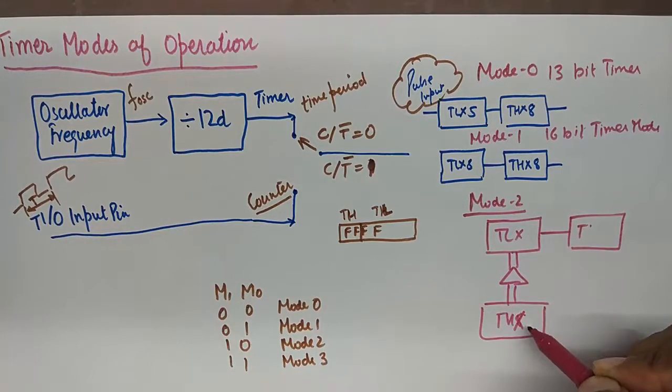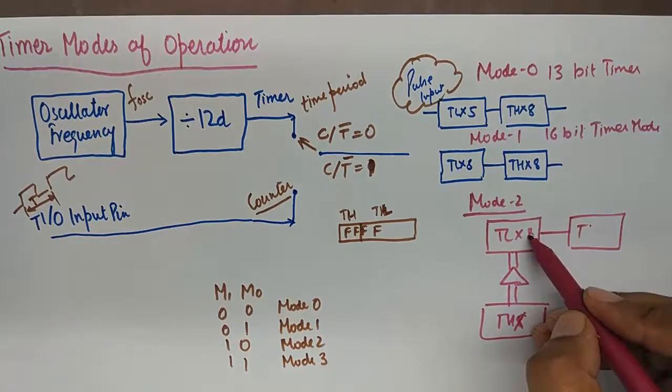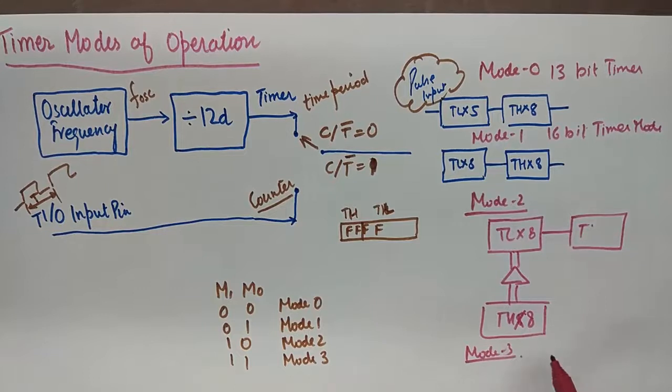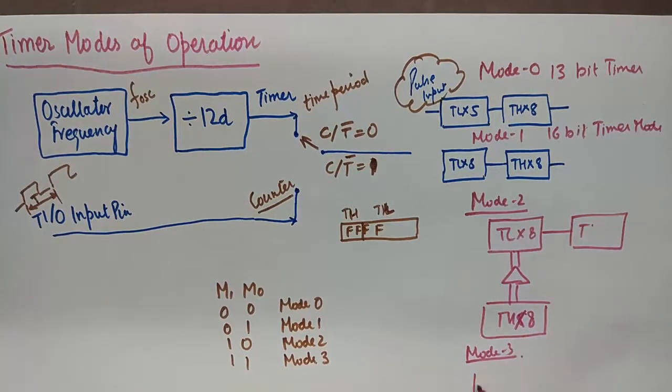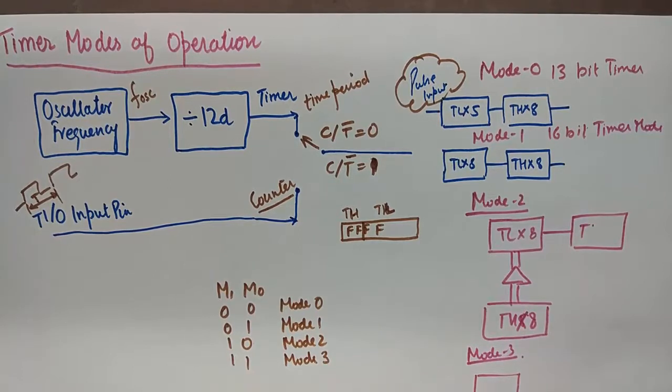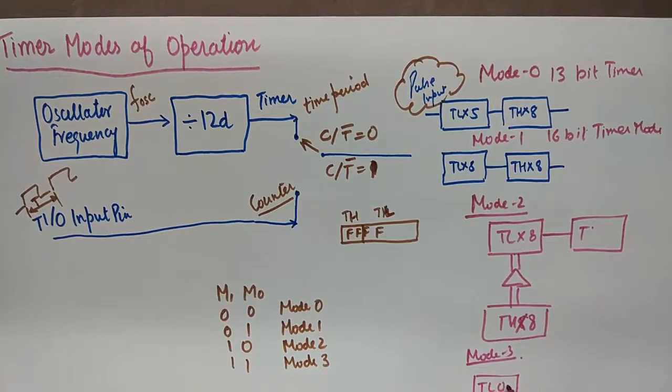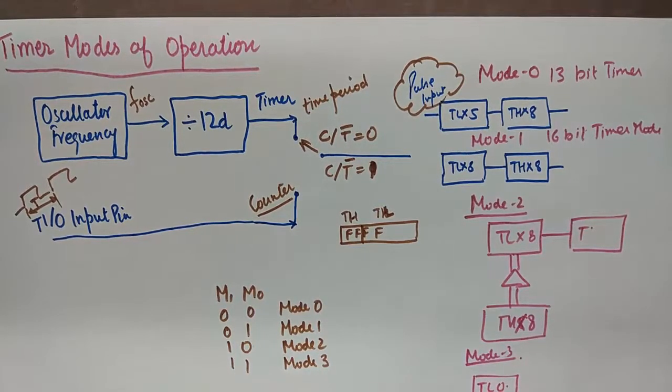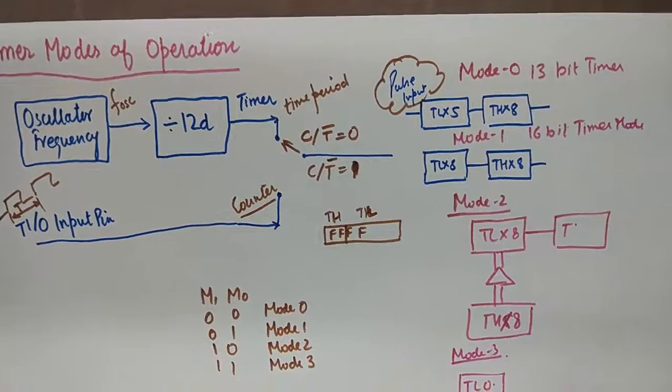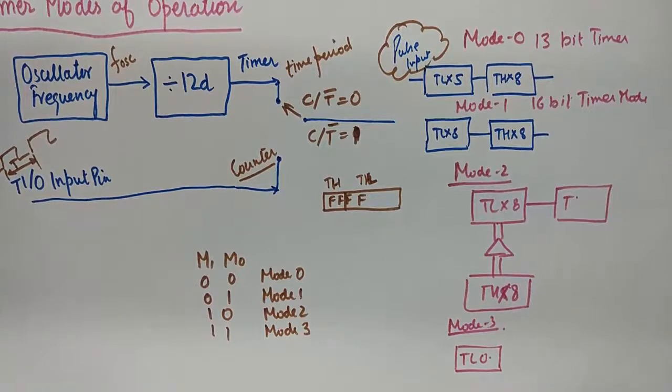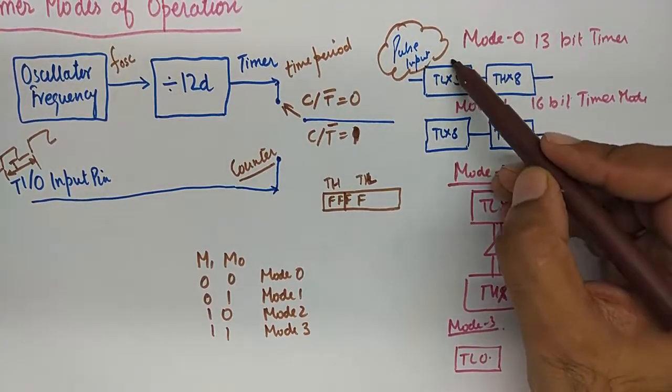I will show you the significance of these modes once I draw the block diagram. And mode 3 is 8-bit timers, but both the 8-bit timers are taken from TL0 and TH0. So let's start with mode 0. Mode 0 is the 13-bit timer mode, and the 13 bits are taken from 5 bits from the lower timer register.